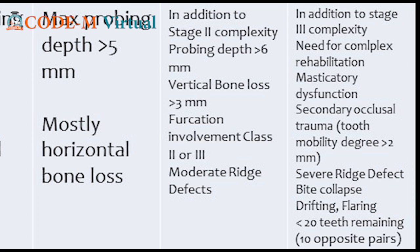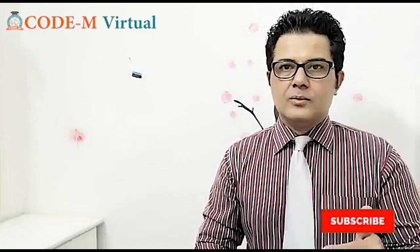So this is how we examine periodontitis types in the patient. Now we know which is Stage 1, which is Stage 2, and Stage 3 and 4, according to severity and complexity. Along with this, we have to examine the extent of the disease — how far this disease has gone. We have to combine all these things during examination of a patient.